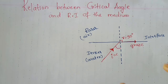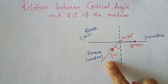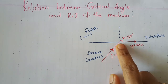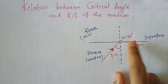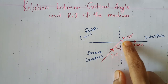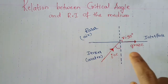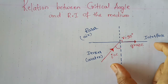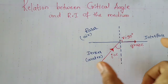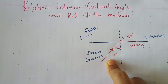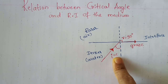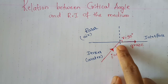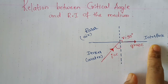Here I have taken a diagram where the incident angle is equal to the critical angle. You will see that the refracted ray grazes the interface, which means the refraction angle becomes 90 degrees. This part of the total internal reflection diagram shows that at the critical angle, the refraction angle becomes 90 degrees and the refracted ray grazes the interface.